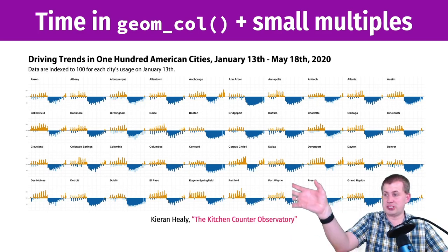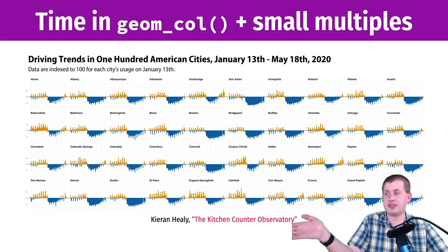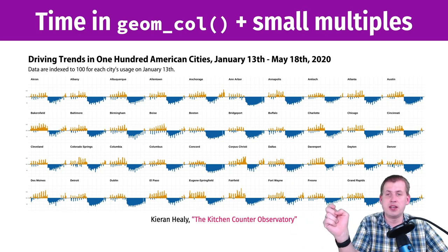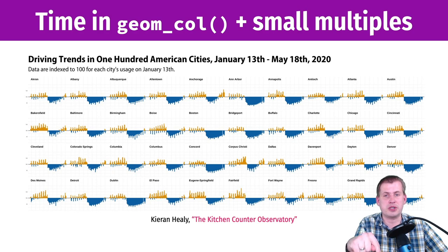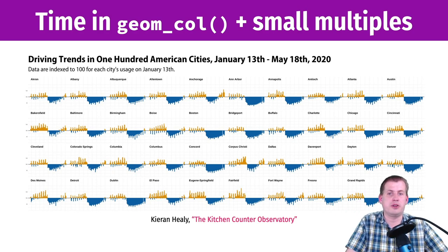If you want to see the full chart, Healy has 100 cities — this is only the first few rows. If you look at the presenter view for this and press P, you can see the link to his whole blog post about this.